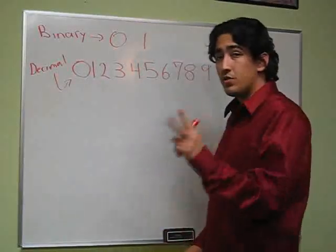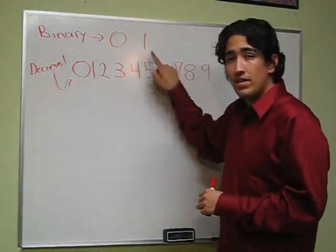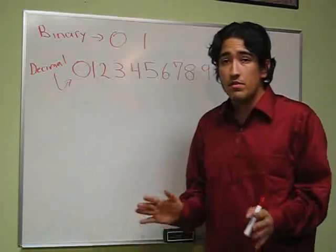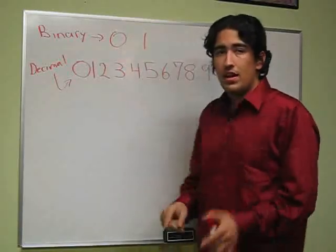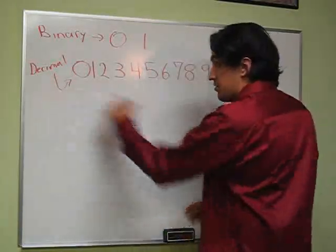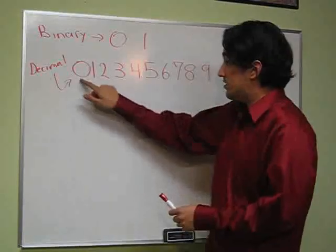In the binary system, we only have two symbols, 0 and 1. We have to be able to represent all numbers using only these two symbols. In the system you're used to, the decimal system, you have 10 symbols: 0, 1, 2, 3, 4, 5, 6, 7, 8, and 9.